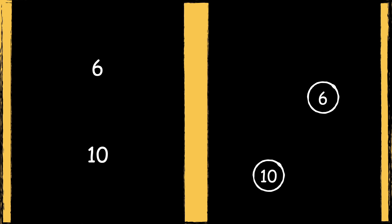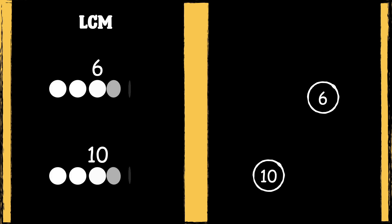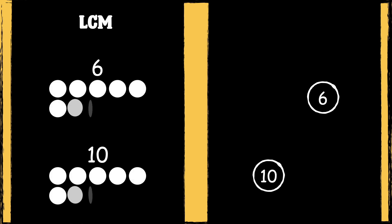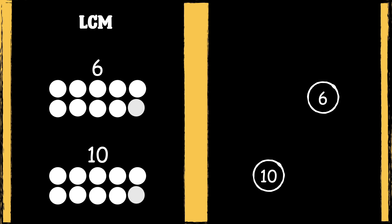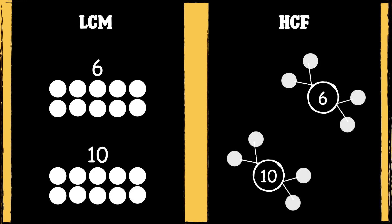Now it's your turn. Here are two numbers: 6 and 10. Can you find the lowest common multiple of these two numbers? Can you also find the highest common factor? Let me know your answers in the comment section.